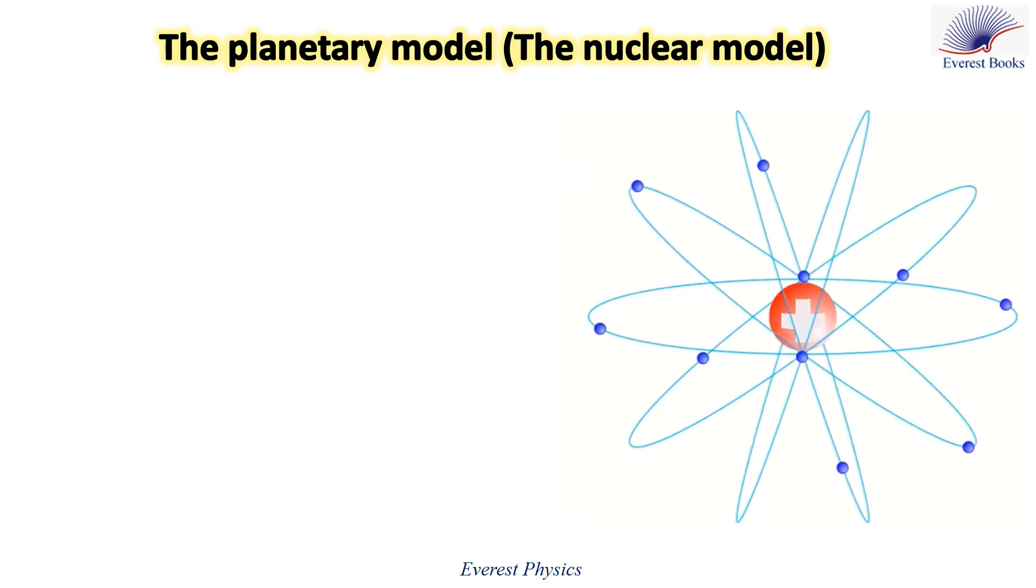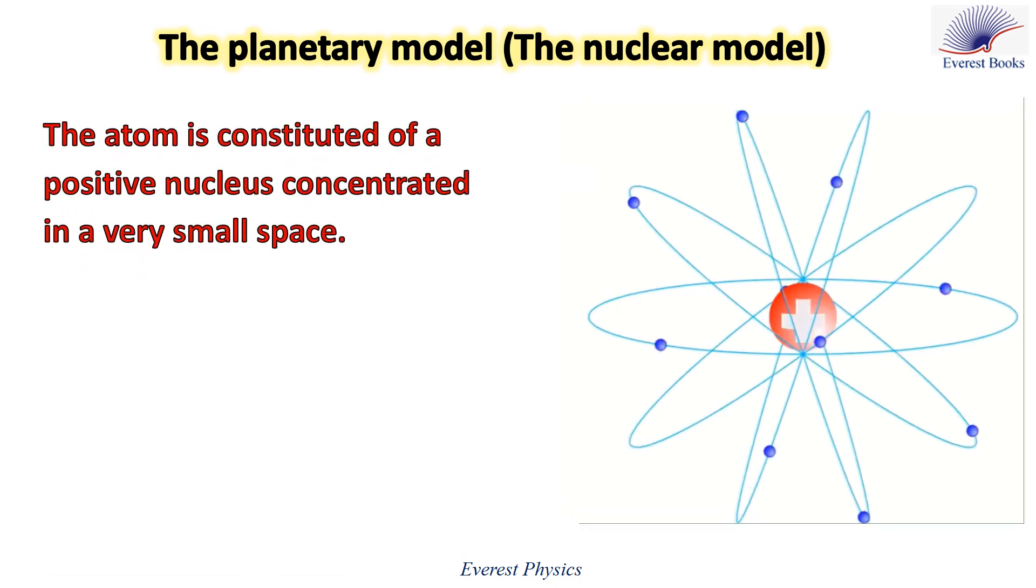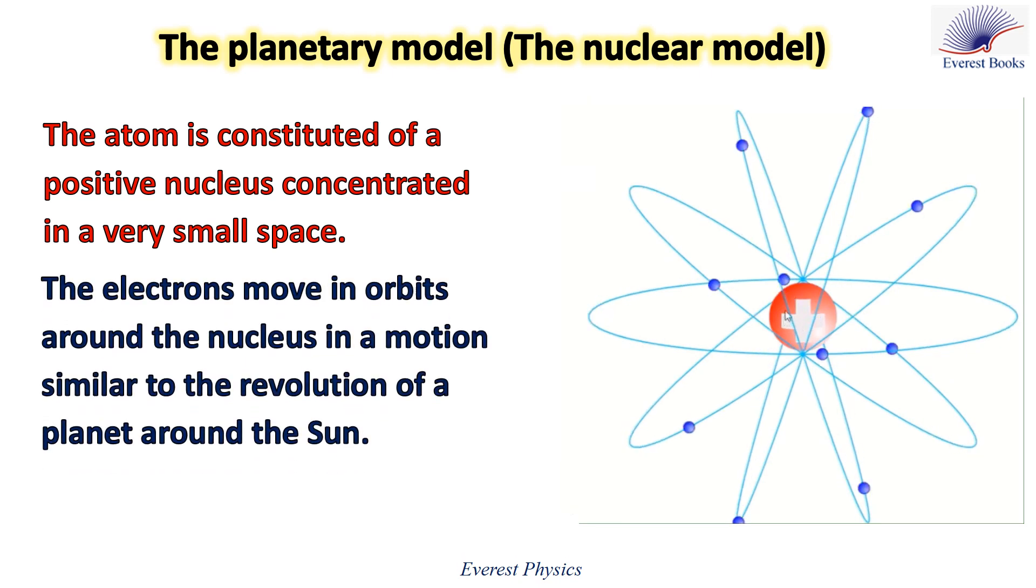The atom is constituted of a positive nucleus concentrated in a very small space. The electrons move in orbit around the nucleus in a motion similar to the revolution of a planet around the sun.